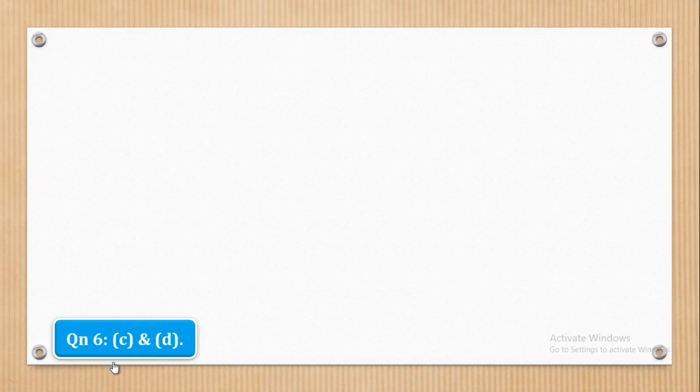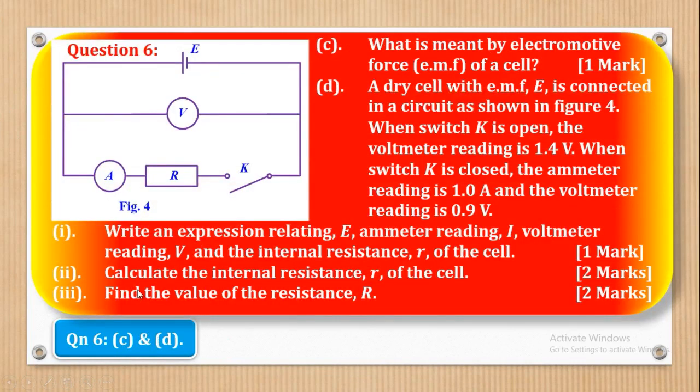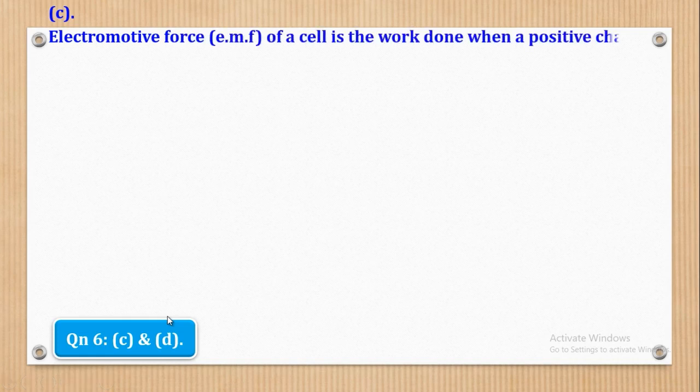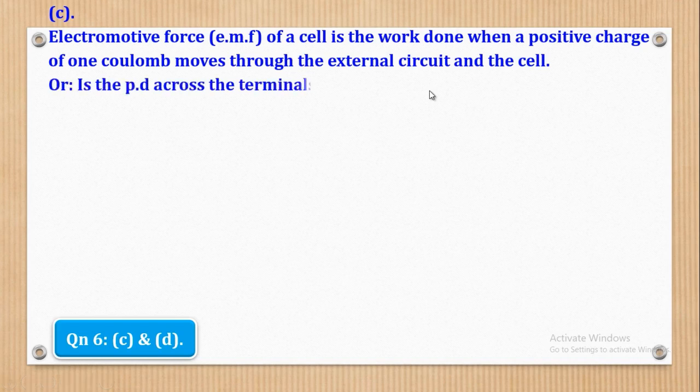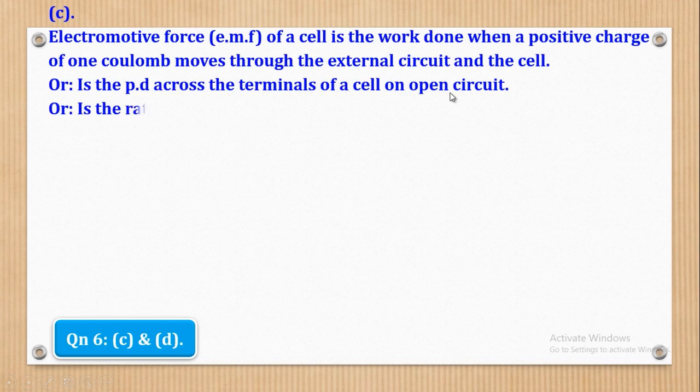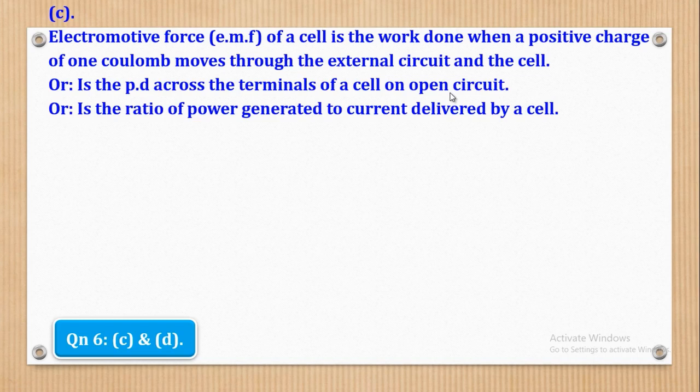Now we shall go to part C. Part C says, what is meant by electromotive force, in brackets EMF, of a cell? And I give it one mark. So electromotive force of a cell is the work done when a positive charge of one coulomb moves through the external circuit and the cell. So that is the definition for electromotive force of a cell. But you can also define it in the following way. The EMF is the PD across the terminals of a cell on open circuit. Know that word, on open circuit. So I can also say that this is the ratio of power generated to current delivered by the cell.